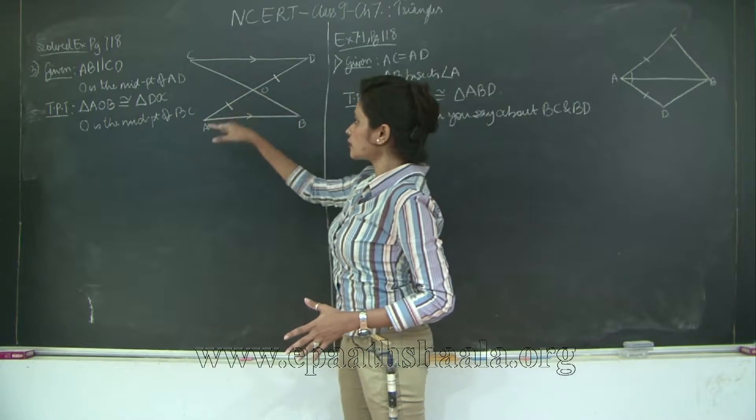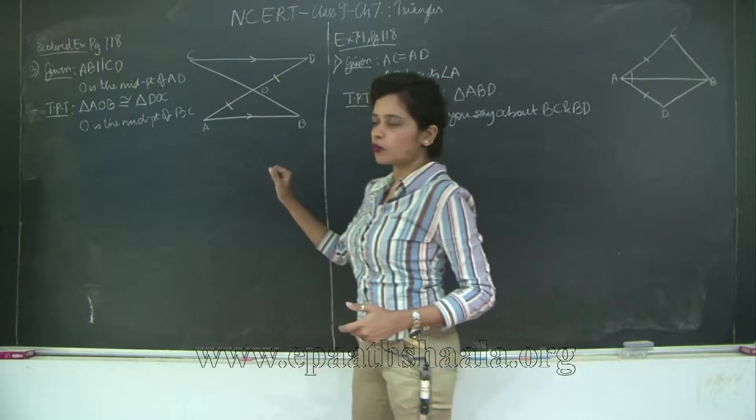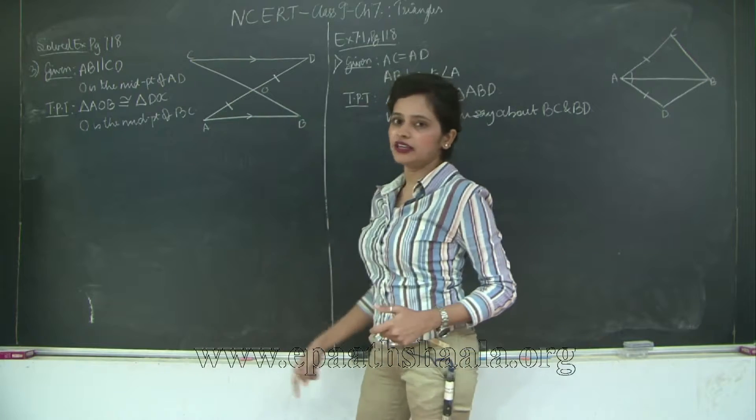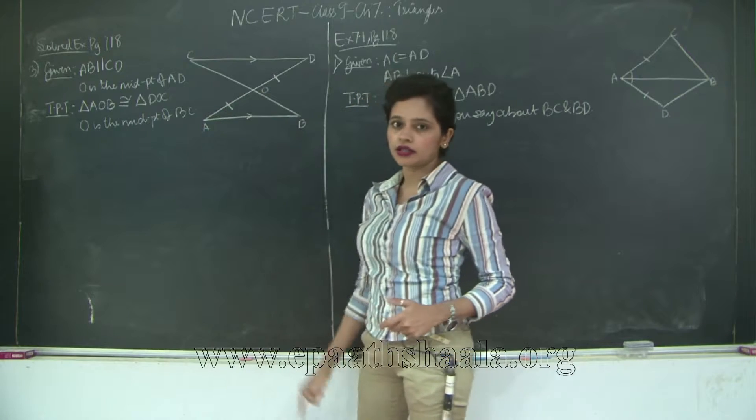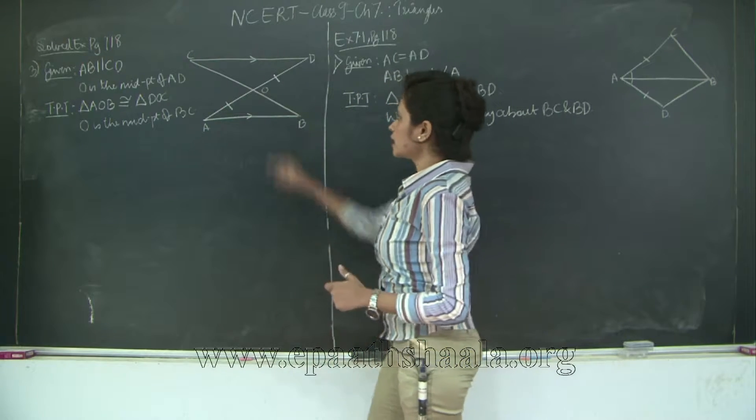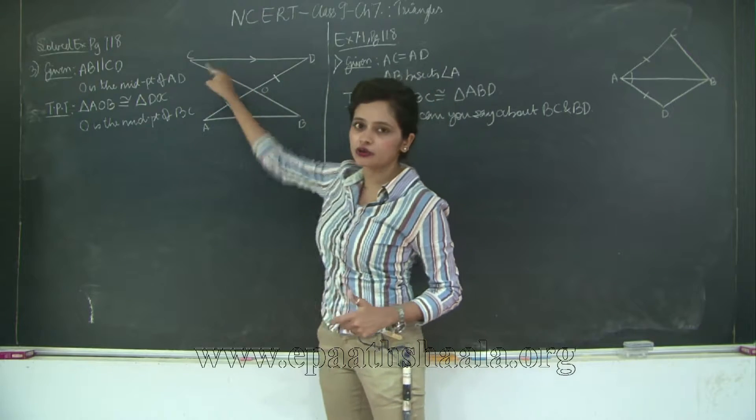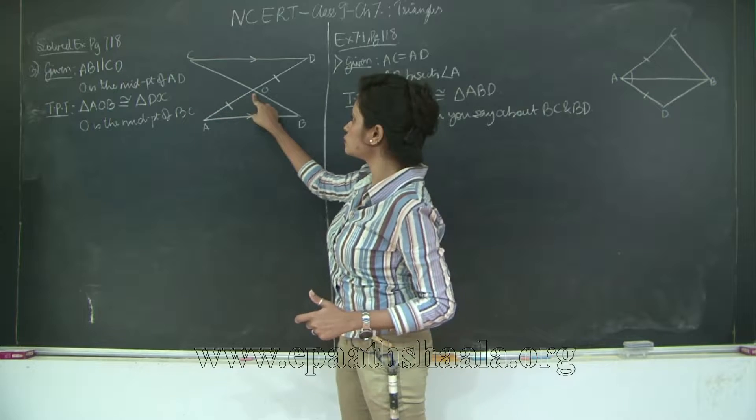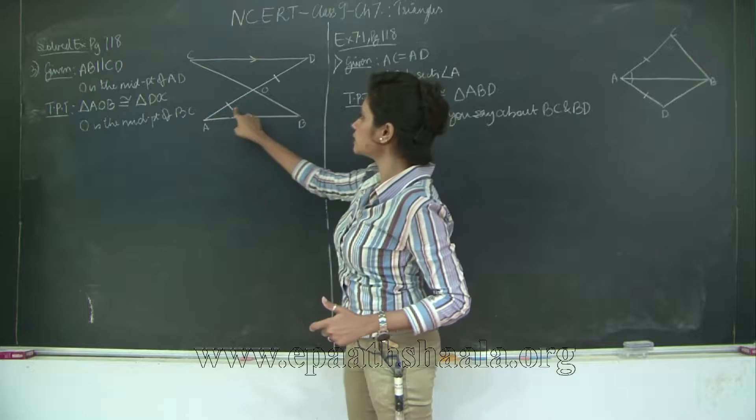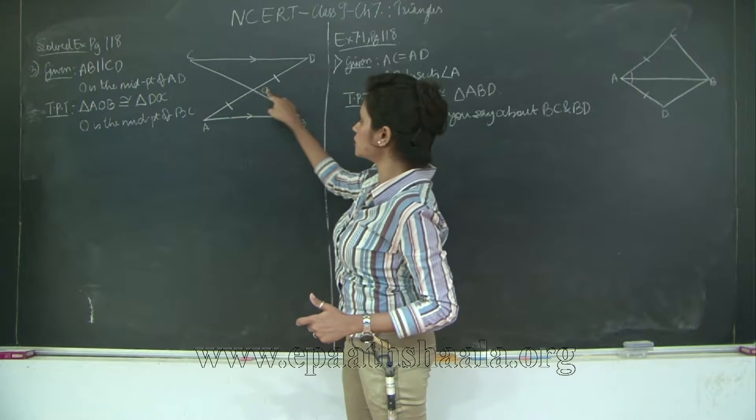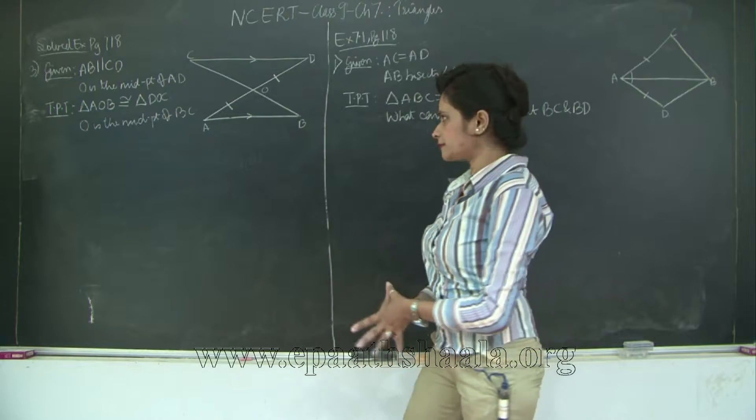Now considering these two triangles that is AOB and DOC. What do I have? CD is parallel to AB. Therefore angle CDO is equal to angle BAO by alternate angles. We have a vertically opposite angle over here. So AOB is equal to DOC. And we prove that two angles here are equal and there is a side between them that is equal. That is OA is equal to OD. Therefore the two triangles are congruent by the ASA test of congruence.